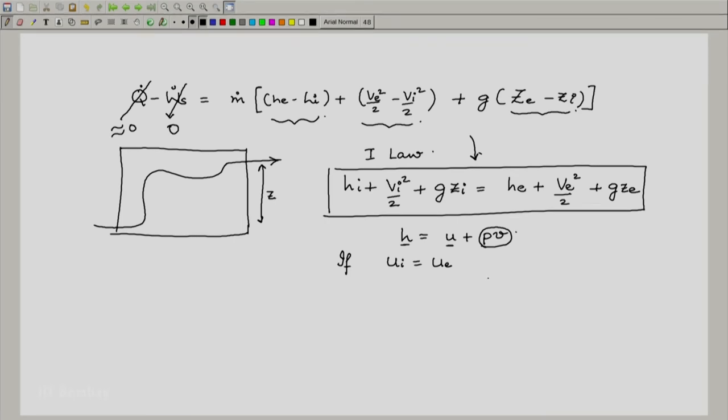The remaining terms would be the same and this would of course on the right side be equal to p_e upon rho_e plus v_e squared by 2 plus g z_e.